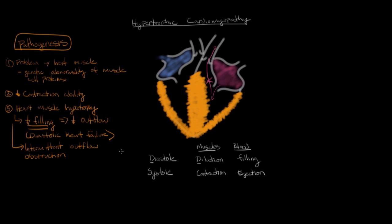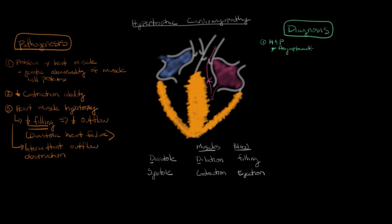Now let's discuss how hypertrophic cardiomyopathy is diagnosed. The first step is the history and physical. What's important is that an individual may actually be asymptomatic — they may have no signs at all.